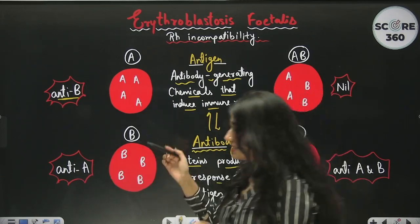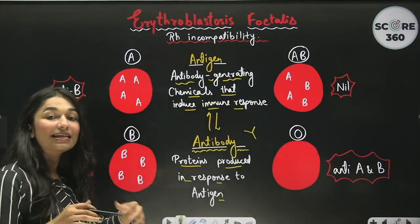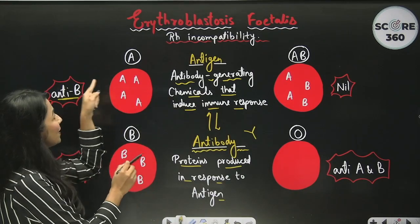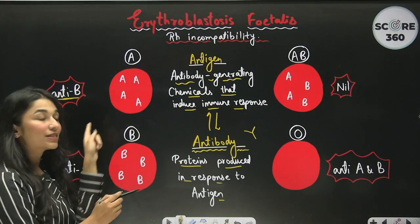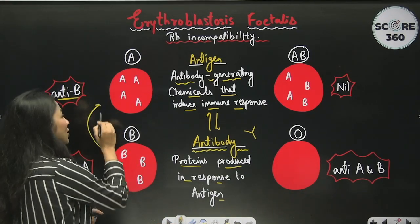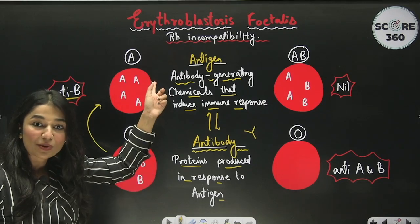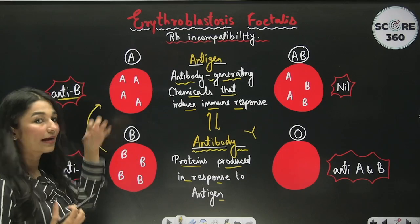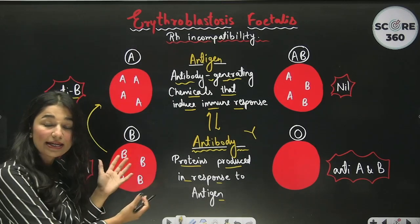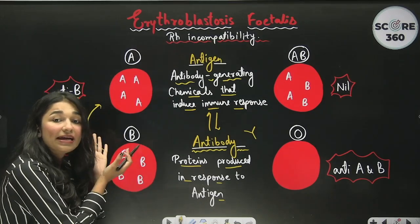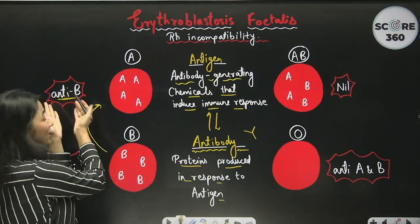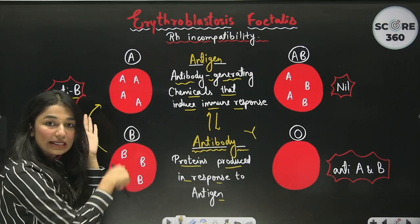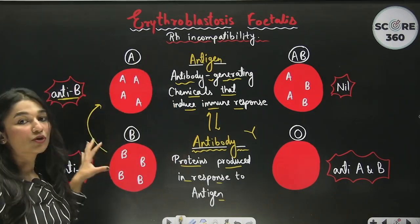One important thing to understand about blood transfusion: if someone has blood group A and blood group B is transfused into them, when antigen B enters the body, the anti-B antibodies will recognize it as foreign, generate an immune response, and kill those RBCs. This is the fundamental meaning of the blood grouping system.